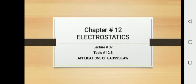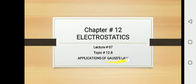Today we are going to start Chapter 12, that is Electrostatics, topic 12.8: Applications of Gauss's Law. This is an important long question. Gauss's Law is applicable to calculate or to evaluate the value of electric intensity. In this topic, we will learn approximately three examples with explanation of how we can calculate electric intensity through different closed surfaces.